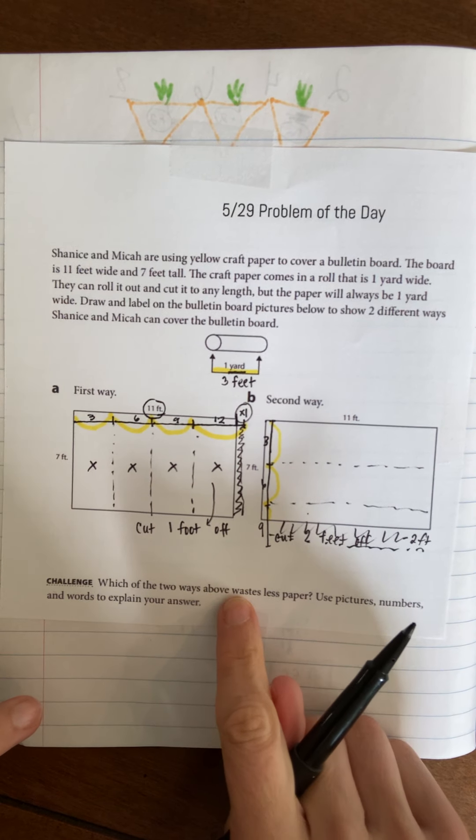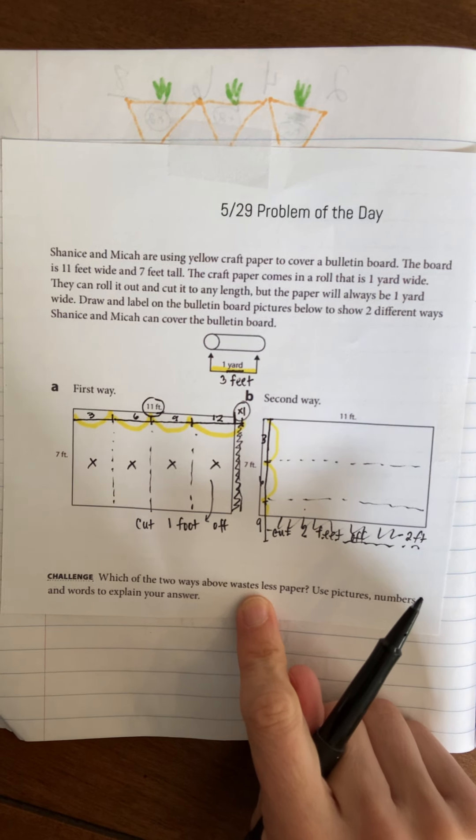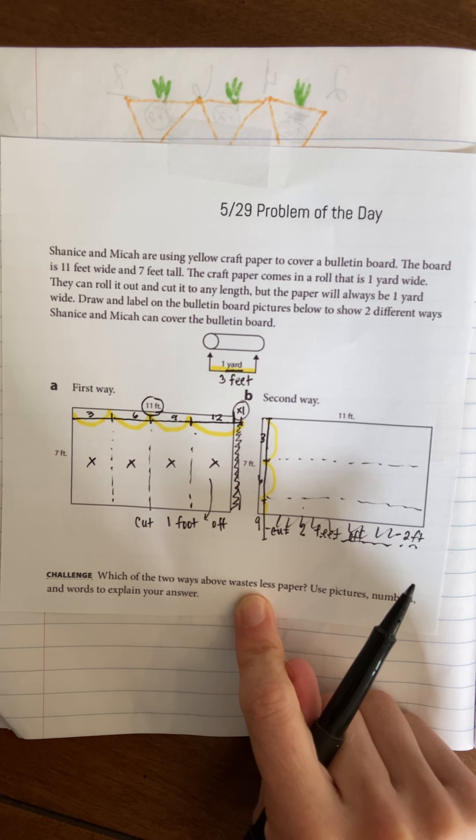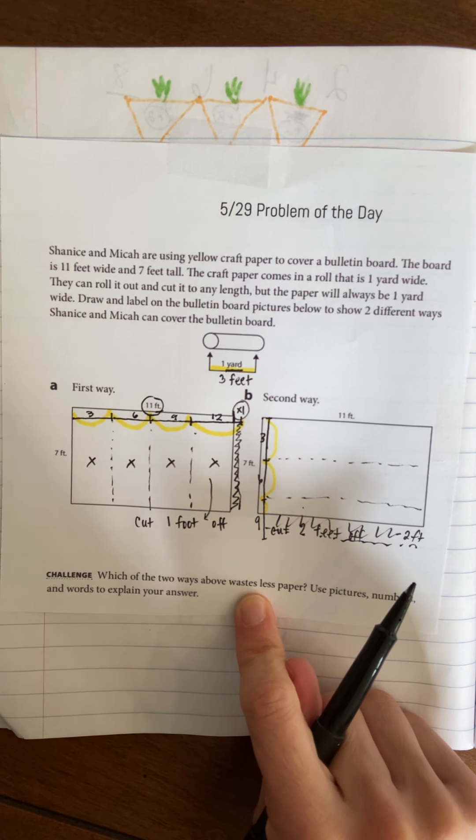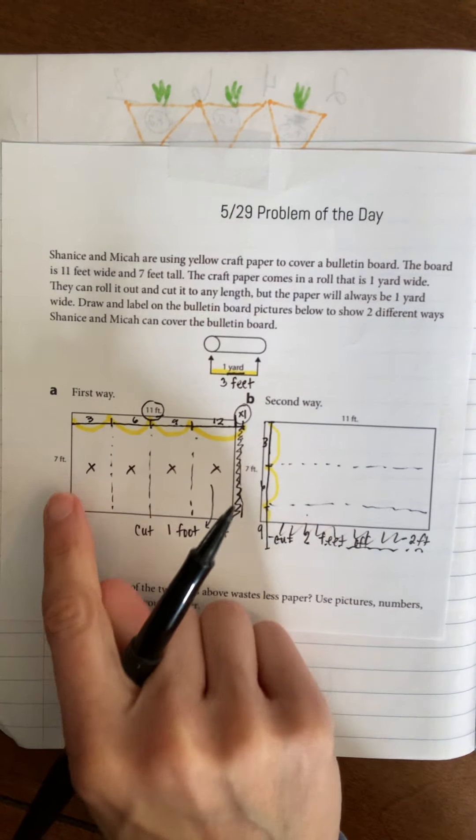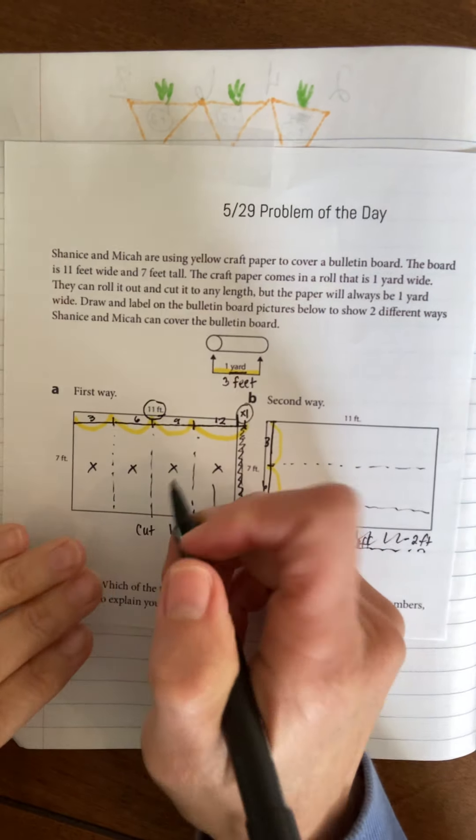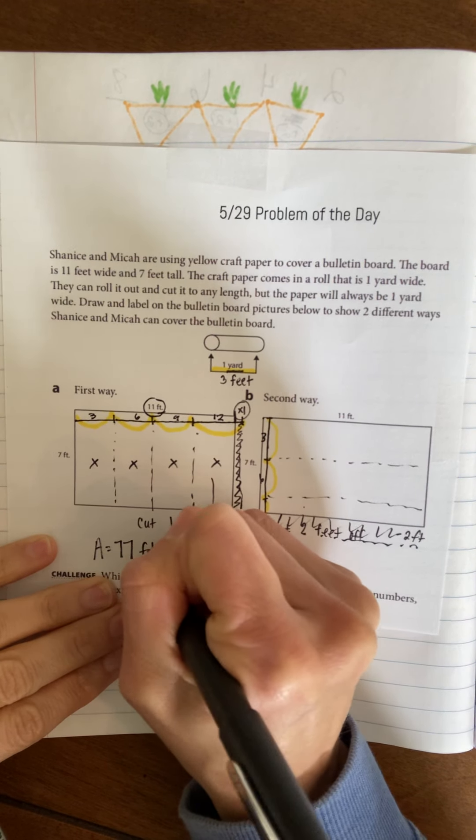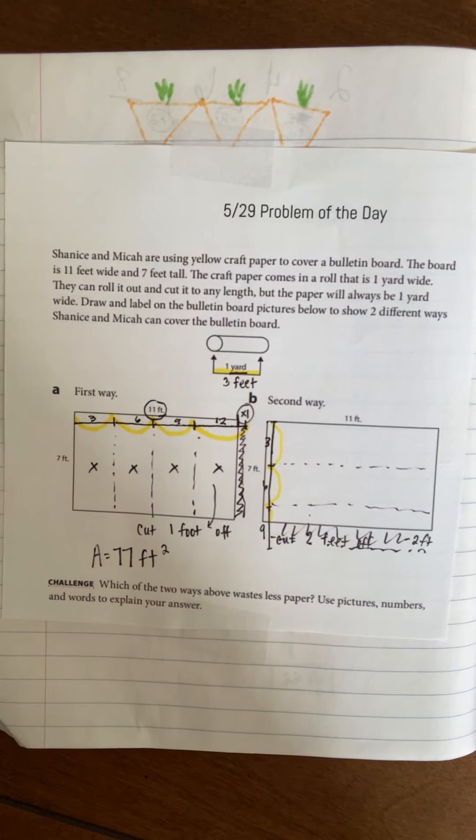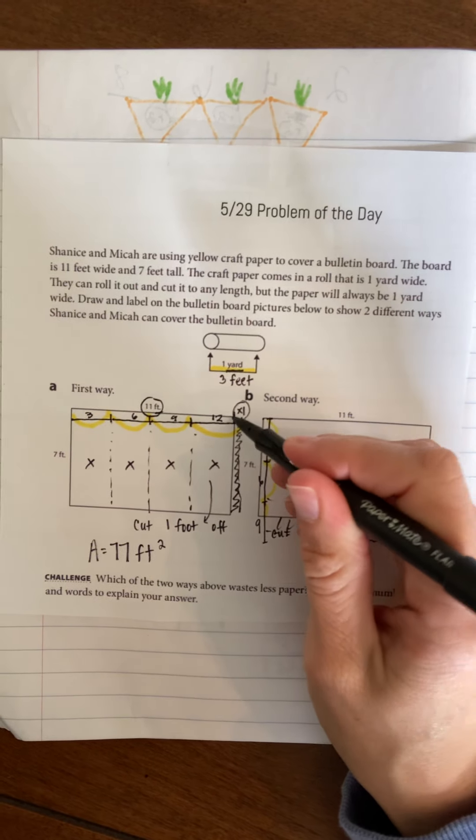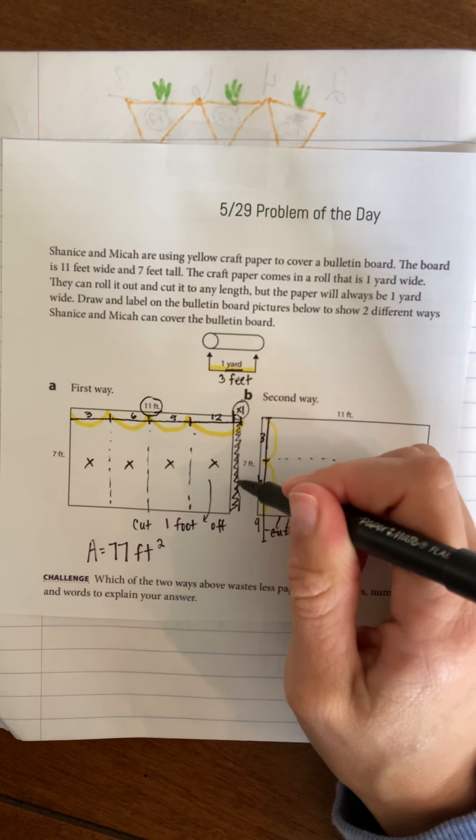Which of the two ways above wastes less paper? Well, if you think about it, no matter what you're using the same paper. As far as what you're actually going to put on the board is the same - 7 times 11, your area is 77 feet squared. However...